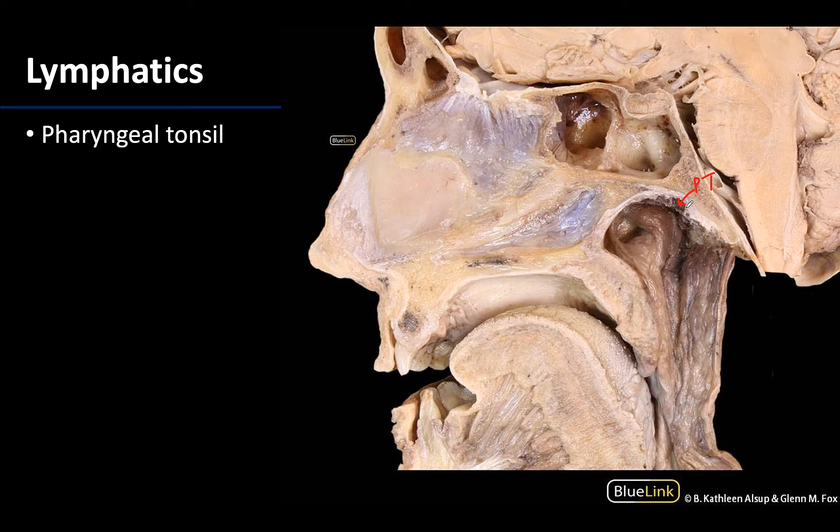This is going to be the posterior superior part of that circumpharyngeal lymphoid ring, or Waldeyer's ring. And the reason we can't see this particularly well is that typically the pharyngeal tonsil reaches its maximum size around